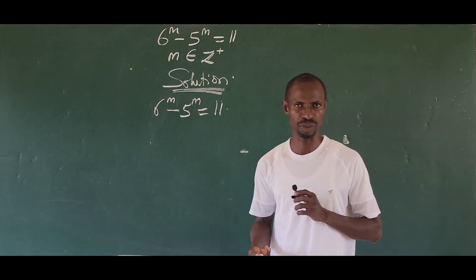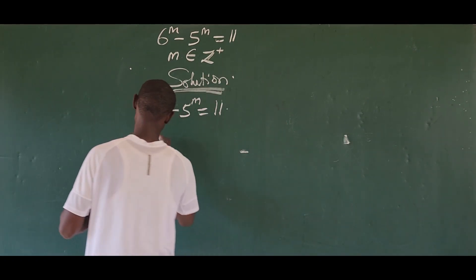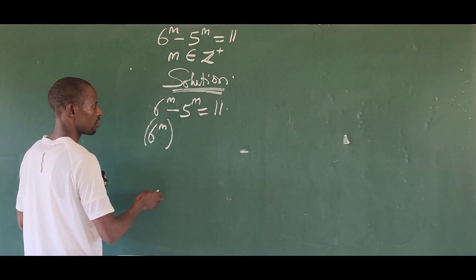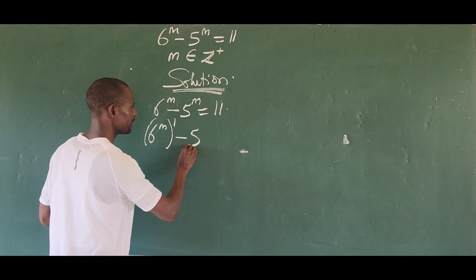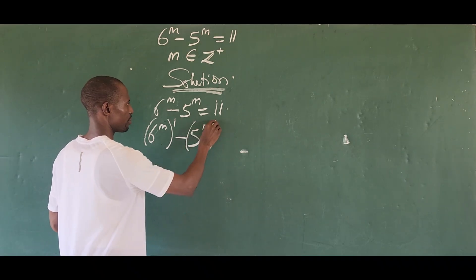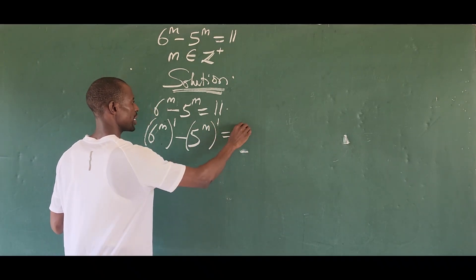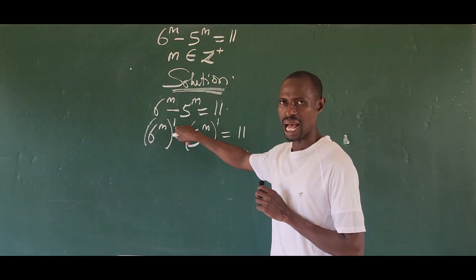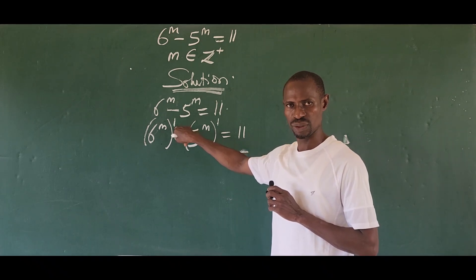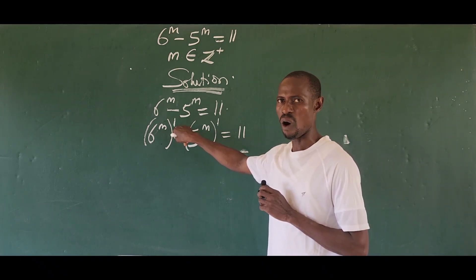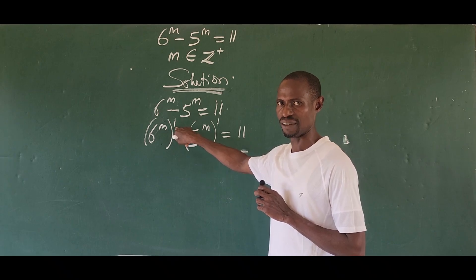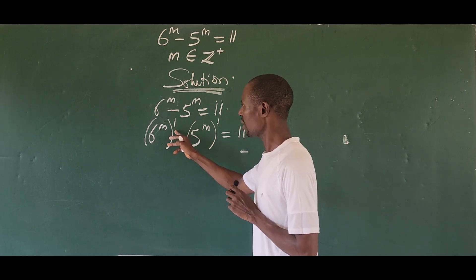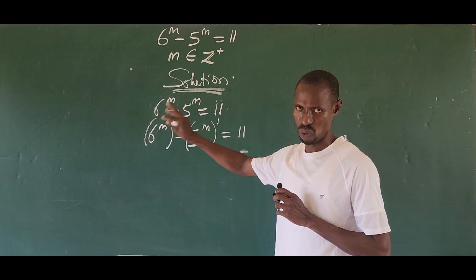We could only have difference of two cube. So if I decide to raise this to, let's take here, our 6 to the power of m raised to the power of one, then minus 5 to the power of m raised to the power of one equal to eleven. This has not really changed a thing. Now, this one can equally be expressed as two all over two, or three all over three, or four all over four, five all over five.